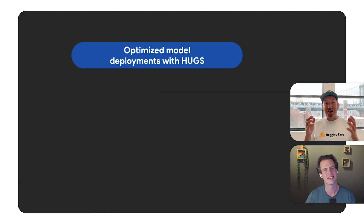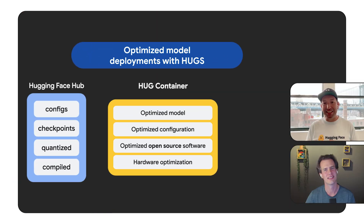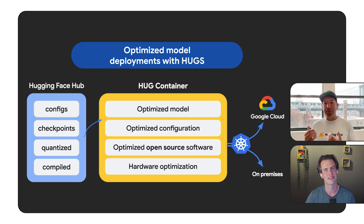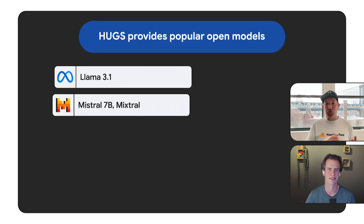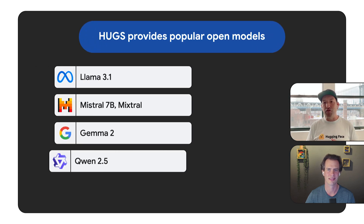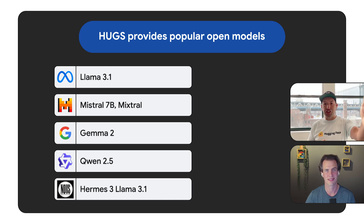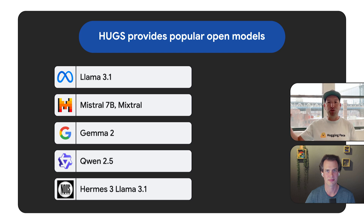So how does Hugs actually solve this? Well, the heart of the Hugs service is the Hugs model deployment container that is optimized end-to-end to deliver maximum performance, whichever hardware you provide it with. It will look for the optimal configuration and the optimal model checkpoints — with great open models available today from Meta, from Mistral. You'll find Gemma there, models from Quen, and great fine-tunes from the community. Also coming soon: embedding and ranking models, so you can build full-stack solutions on top of Hugs.